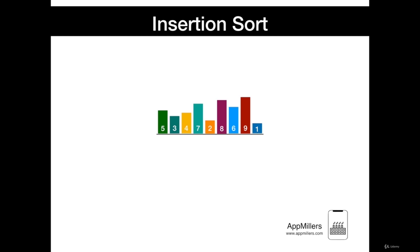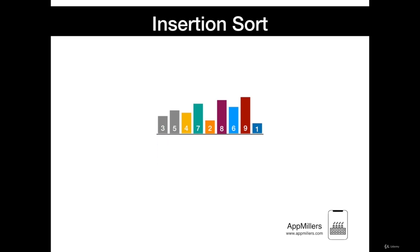In insertion sort, when we begin, the leftmost number is considered fully sorted. Then from the remaining numbers, the leftmost number is taken out and compared to the already sorted number to its left. If the already sorted number is larger, the two numbers swap. This operation repeats until either a smaller number appears or the number reaches the left edge. In this case, 5 is considered fully sorted, then 3 is taken out and compared with 5. Since 5 is greater than 3, the two numbers are swapped. The number reaches the left edge, so it stops there and 3 is considered fully sorted.